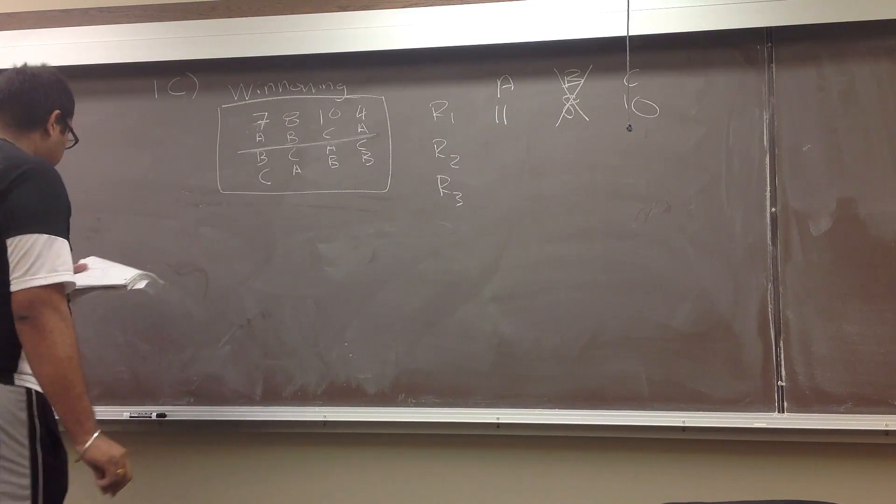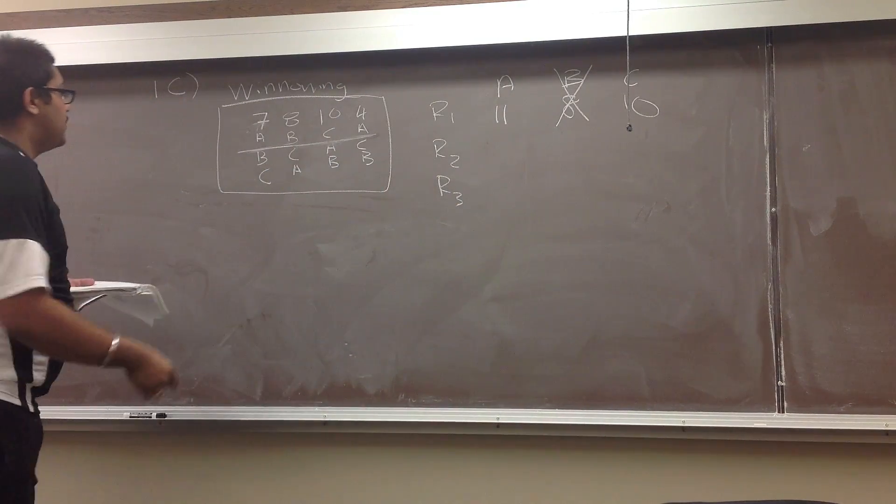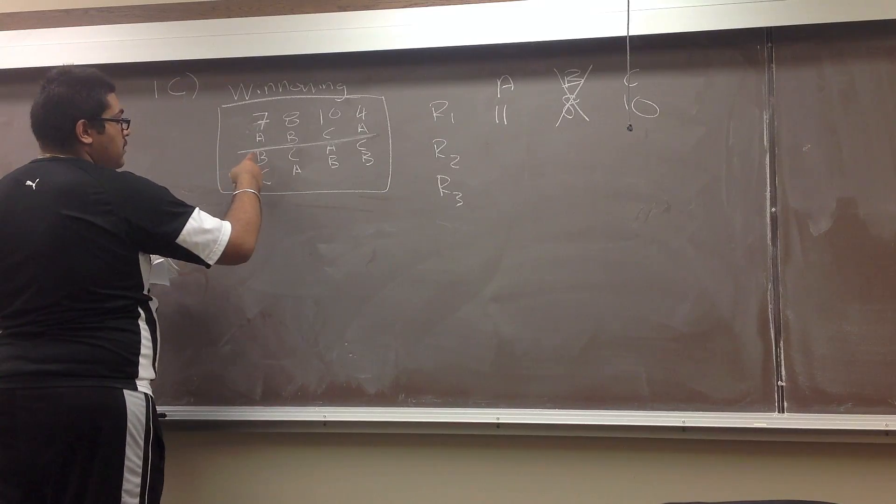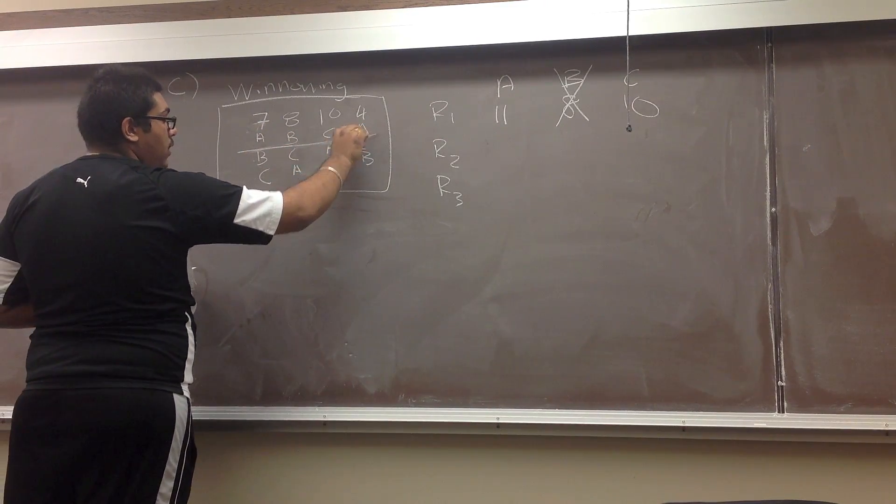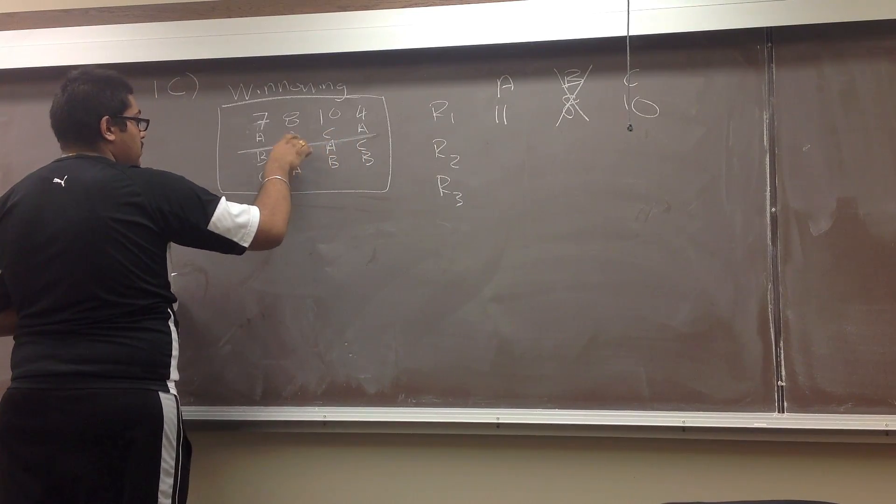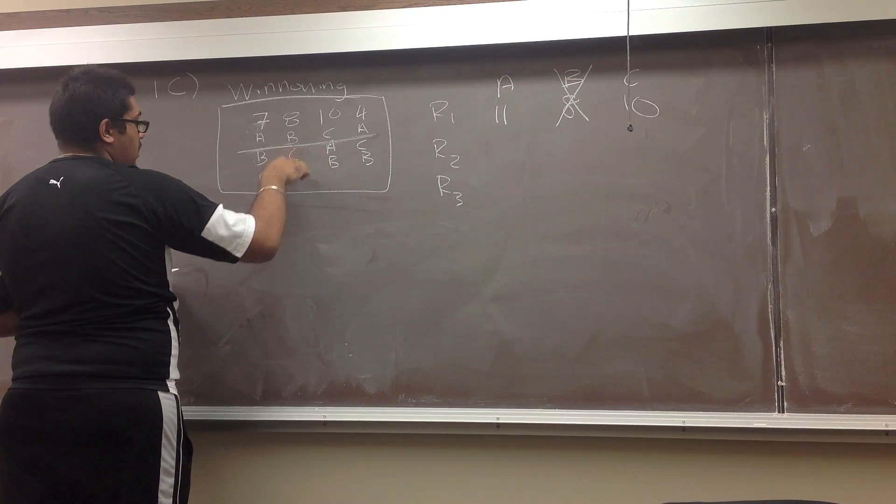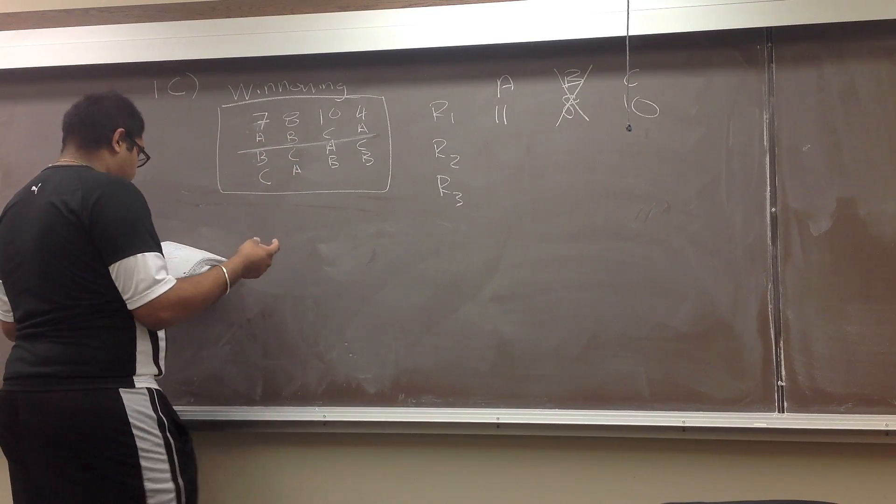So now we just go down to A versus C. So A has a total of, again, A over B, A over C, and A is not over any of the other two options. So in total, again, it has only eleven.